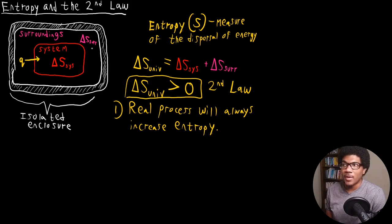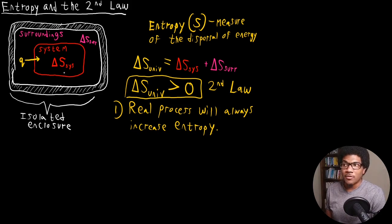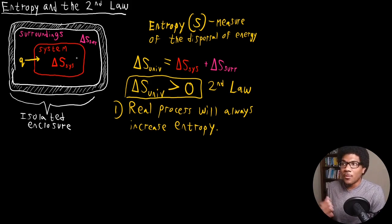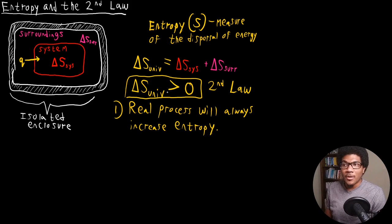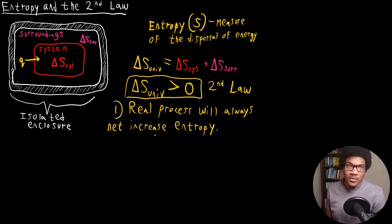With delta S surroundings, it's going to be donating some heat or transferring some heat to the system. The entropy of the system is going to increase because that thermal energy is going to increase the fluctuations of the atoms, so it's going to increase the system entropy. But the surrounding entropy is going to decrease. What the second law of thermodynamics is saying is that there always will be a net increase in entropy when you're talking about the entropy of the entire universe.